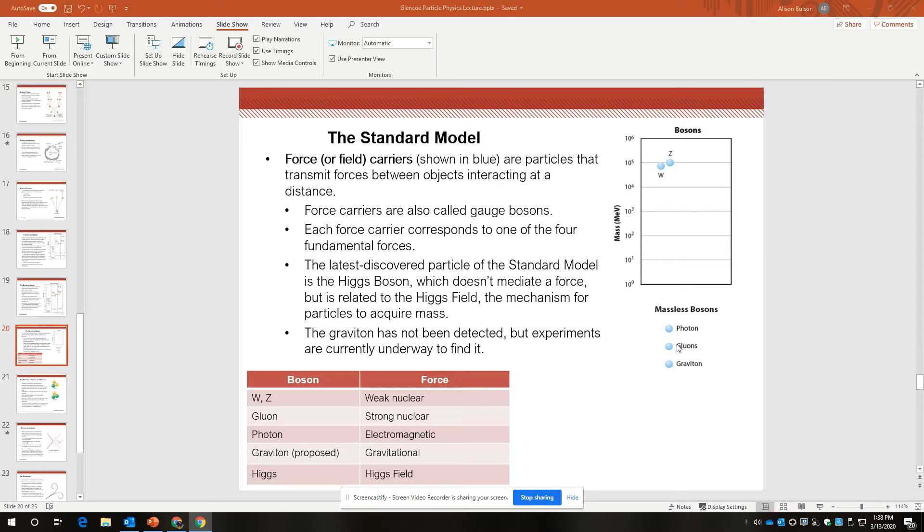The graviton is a proposed particle that has not yet been detected. Experiments are underway to find it, but it is proving elusive. So it is not really part of the standard model at this time since it hasn't been detected.